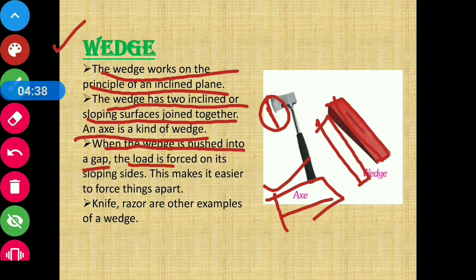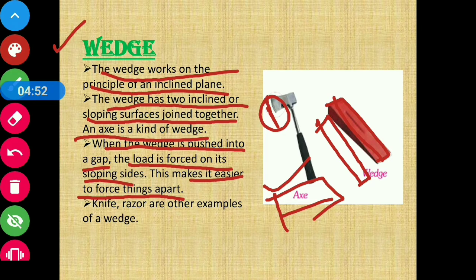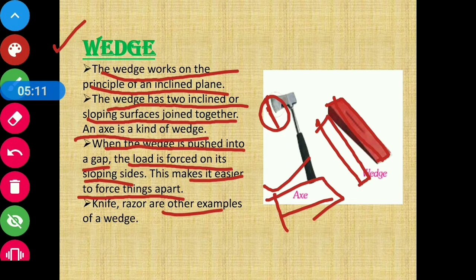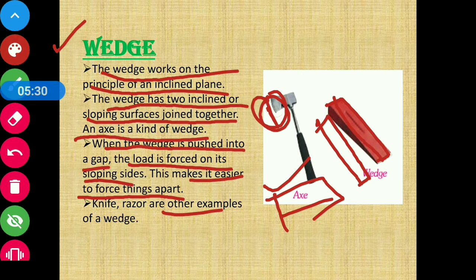When the wedge is pushed into a gap, the load is forced on its sloping sides — this makes it easier to force things apart. Jab yeh wedge kisi gap mein push hota hai, toh sloping surfaces mein ek force create hoti hai jo chizo ko separate karne mein, yaani break karne mein madad karta hai. Other examples of wedges are knife and razor. Wedge mein dono inclined planes ek point pe intersect karke sharp end banate hain, aur yeh sharp end kisi object pe force apply karke use easily break kar deta hai.